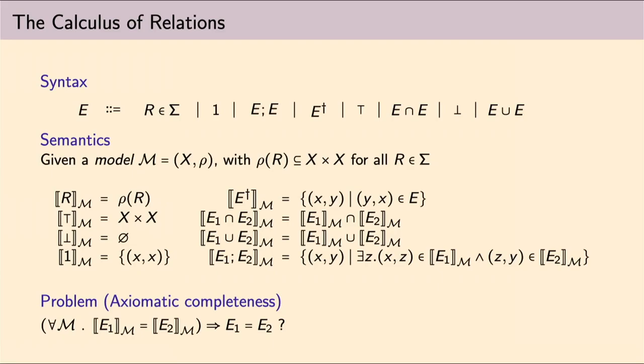But then one question which is natural to ask is completeness, axiomatic completeness. That is, can we find a set of axioms such that two expressions of the syntax are provably equal by means of these axioms whenever they are equal in any possible model. So, the answer to this question is that there is no such an axiomatization. This has been proved by, for example, Monk in 1964, but it's actually an active line of research. People try to prove it for maybe fragments of the calculus.